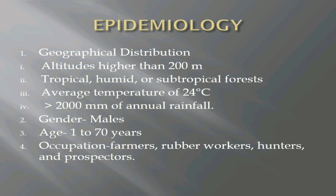What are the epidemiological characteristics of this disease? Regarding geographical distribution, it is mainly found in places with altitudes more than 200 meters in tropical, humid or subtropical forests, with an average temperature of 24 degrees Celsius and more than 2000 millimeters of annual rainfall. It mainly affects males. It can involve individuals from ages 1 to 70 years. It mainly involves people in occupations such as farmers, rubber workers, hunters, and prospectors.